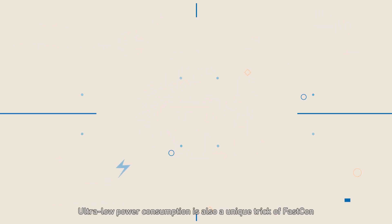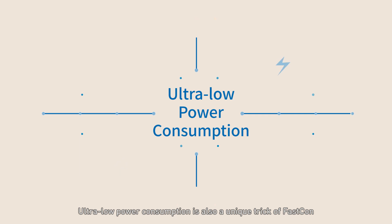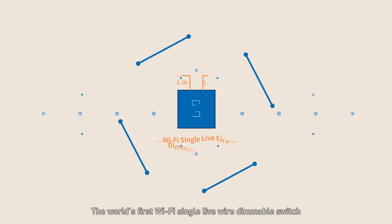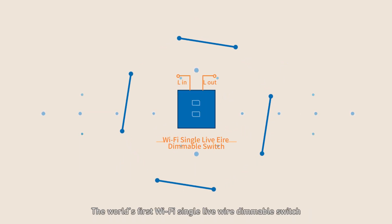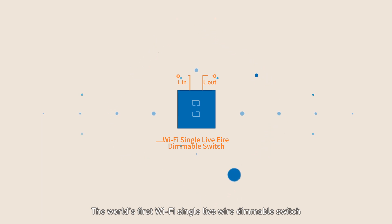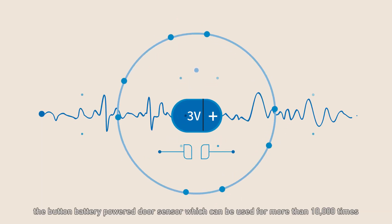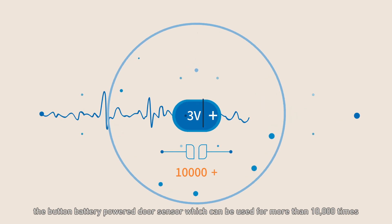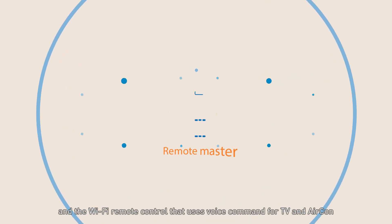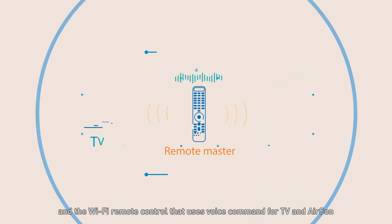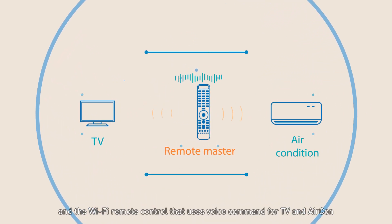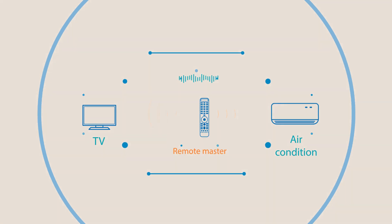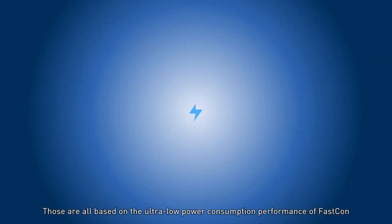Ultra-low power consumption is also a unique trick of FastCon. The world's first Wi-Fi single live wire dimmable switch, the button battery powered door sensor which can be used for more than 10,000 times, and the Wi-Fi remote control that uses voice commands on TV and air conditioning — those are all based on the ultra-low power consumption performance of FastCon.